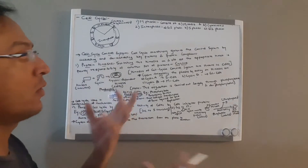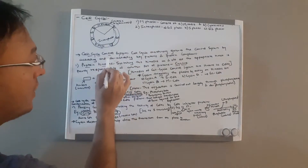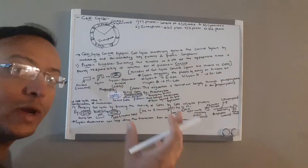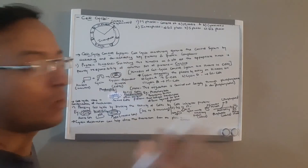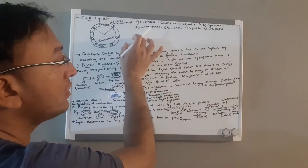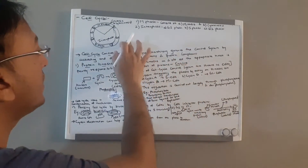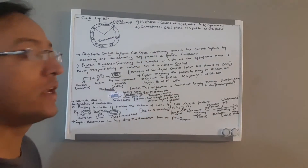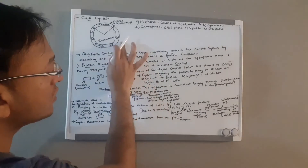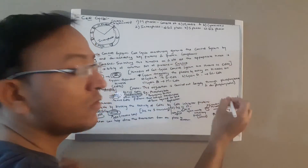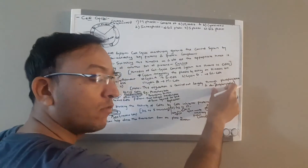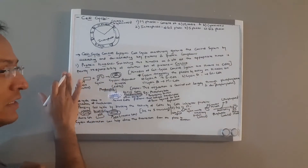The cell cycle is controlled by different chemical interactions through a cell cycle control system. This machinery governs the cell cycle by activating and deactivating key proteins and protein complexes. The proteins responsible for activating and deactivating are protein kinases. All regulation of the cell cycle is carried largely through phosphorylation and dephosphorylation.